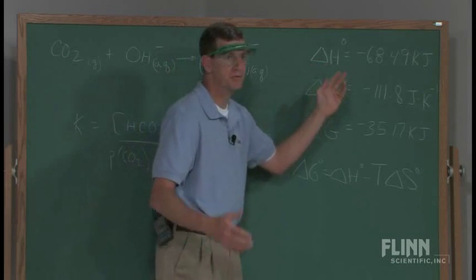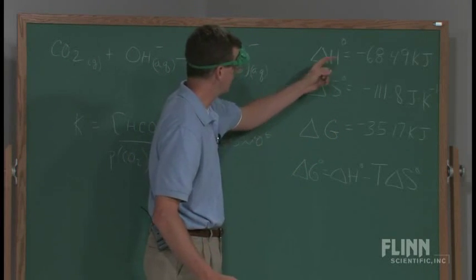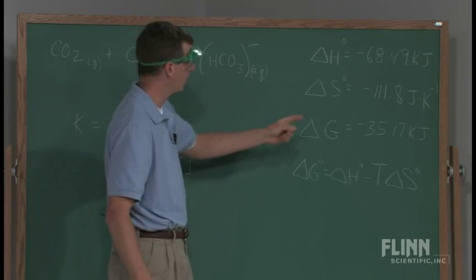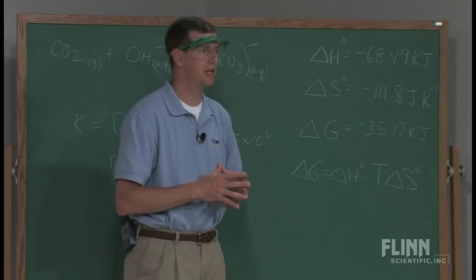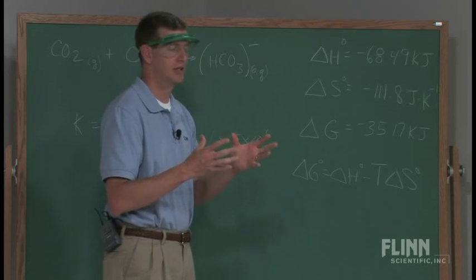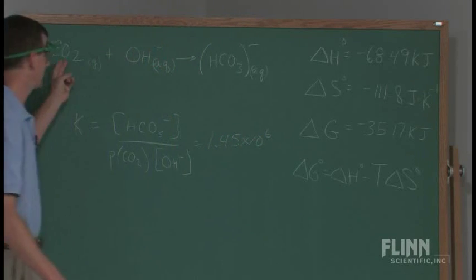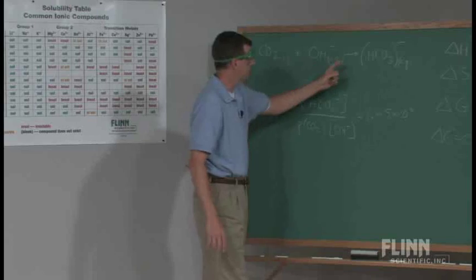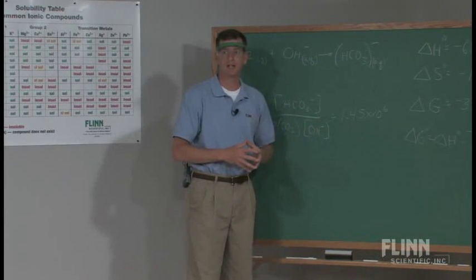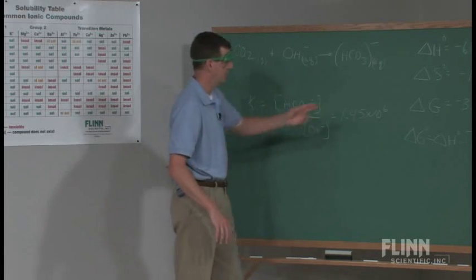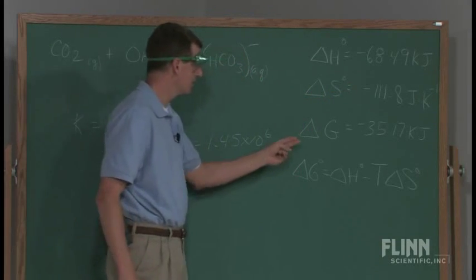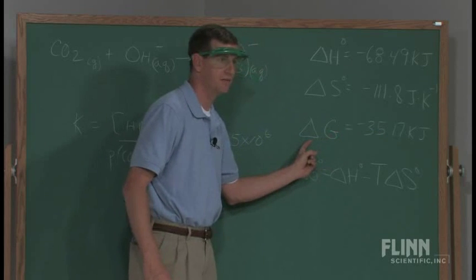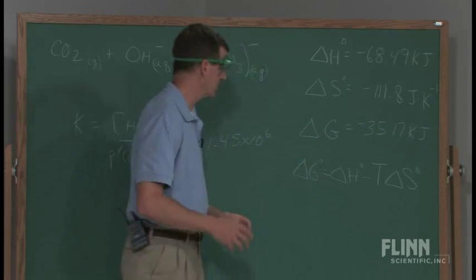If I were to measure this and take a quantitative interpretation of it, my delta H is negative 68.49, so it's exothermic. The entropy is negative 111.8, which means it's actually becoming more organized — there are less probable states that the carbon dioxide can be in. As a gas, there are many, many microstates. When it's trapped in the aqueous hydrogen carbonate ion, there aren't as many possible positions. So my entropy is actually decreasing. It is a spontaneous reaction — it will take place at our normal range of temperatures. It is a negative delta G, Gibbs free energy, and the negative tells me it's spontaneous.